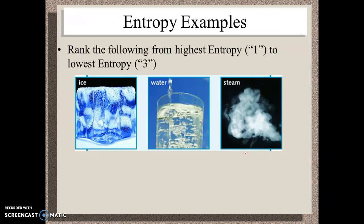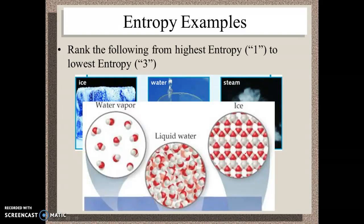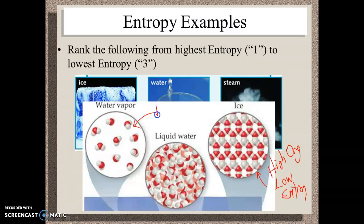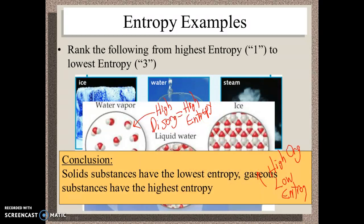Go ahead and fill this in from highest to lowest entropy. Ice, as a solid, has molecules lined up with high organization, which means low disorganization — very low entropy. The gas form has things very spread out and moving all over the place — high disorganization equals high entropy. Just keep repeating to yourself: entropy is the amount of disorganization; the more disorganization, the higher the entropy. Our conclusion: solids have the lowest entropy, liquids are in the middle, and gaseous substances have the highest entropy.